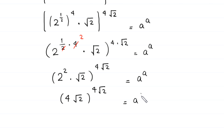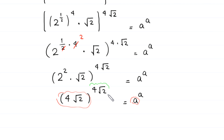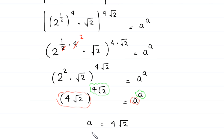This 2 squared will become 4, so we get (4 times root 2) to the power (4 times root 2) is equal to a to the power a. Now, if we compare base with base, we have base 4 times root 2 and we have base a. And comparing the exponent with the exponent, we have exponent 4 times root 2 and exponent a. It is obvious that a is equal to 4 times root 2. This is the final answer of this problem.